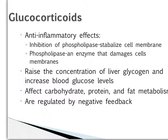Glucocorticoids also raise the concentration level of liver glycogen, which has to do with how your liver metabolizes protein and other foods. This can increase blood glucose levels — important to remember if you're doing bloodwork on an animal and wondering why blood glucose is high. They affect how we metabolize carbohydrates, protein, and fat, and they're regulated by negative feedback.